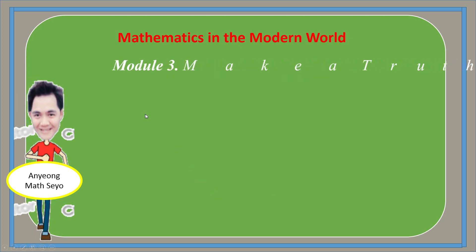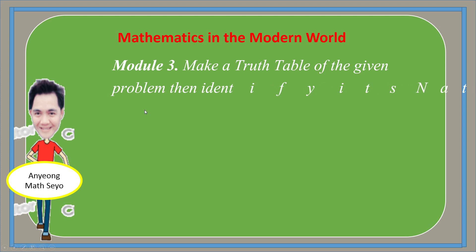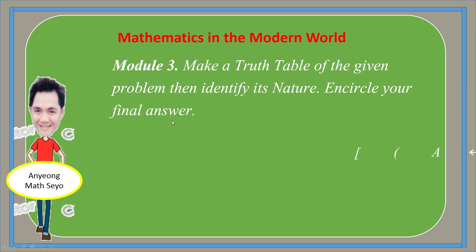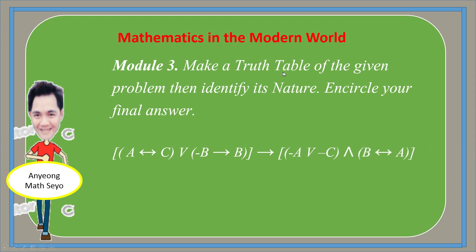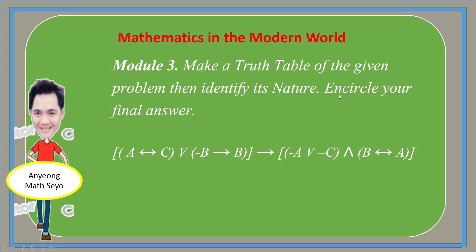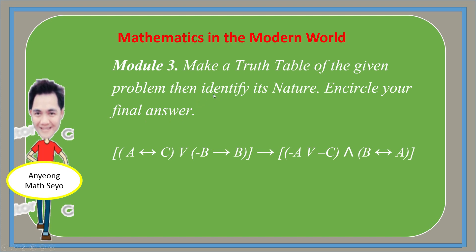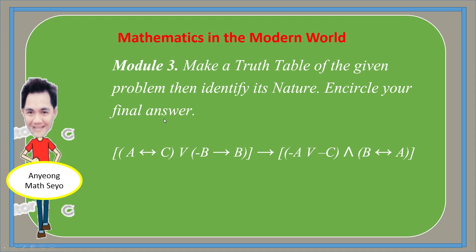For Module 3, your final output is to make a truth table of the given problem and then identify its nature. Encircle your final answer. When making a truth table, please use a straight edge or ruler to make your work presentable. Upon answering, encircle your final answer and identify its nature.